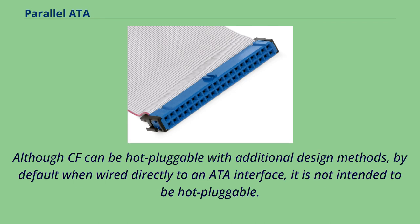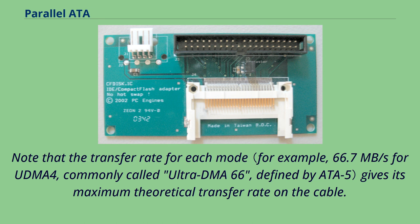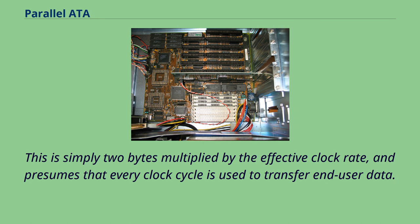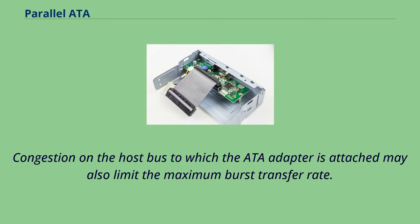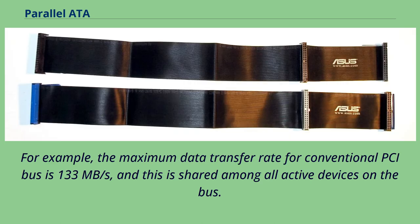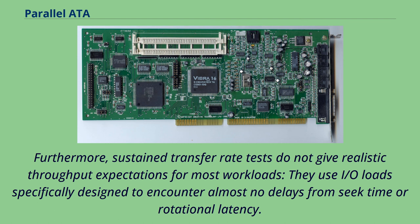The following table shows the names of the versions of the ATA standards and the transfer modes and rates supported by each. Note that the transfer rate for each mode gives its maximum theoretical transfer rate on the cable. This is simply 2 bytes multiplied by the effective clock rate, and presumes that every clock cycle is used to transfer end-user data. In practice, protocol overhead reduces this value. Congestion on the host bus to which the ATA adapter is attached may also limit the maximum burst transfer rate. For example, the maximum data transfer rate for conventional PCI bus is 133 MB per second, and this is shared among all active devices on the bus. In addition, no ATA hard drives existed in 2005 that were capable of measured sustained transfer rates above 80 MB per second. Furthermore, sustained transfer rate tests do not give realistic throughput expectations for most workloads; they use I/O loads specifically designed to encounter almost no delays from seek time or rotational latency. Hard drive performance under most workloads is limited first and foremost by those two factors; the transfer rate on the bus is a distant third in importance.